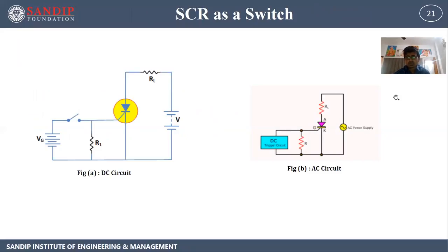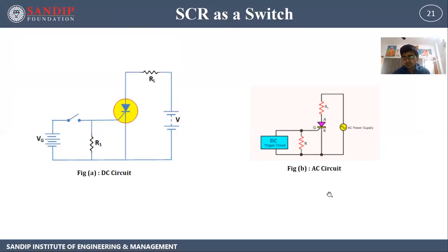SCR as a switch. In a DC circuit, if DC supply is applied with the SCR forward biased and gate supply is given, the device conducts. If the voltage is reversed or force commutation is applied, the device turns off. In an AC circuit, AC supply is provided between anode and cathode: during the positive half cycle the device is forward biased and conducts; during the negative half cycle it is reverse biased and does not conduct. This is SCR as a switch.